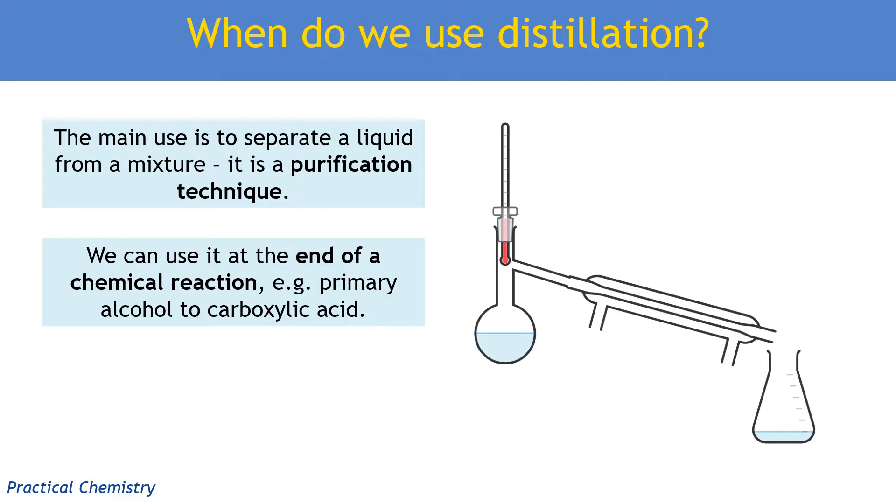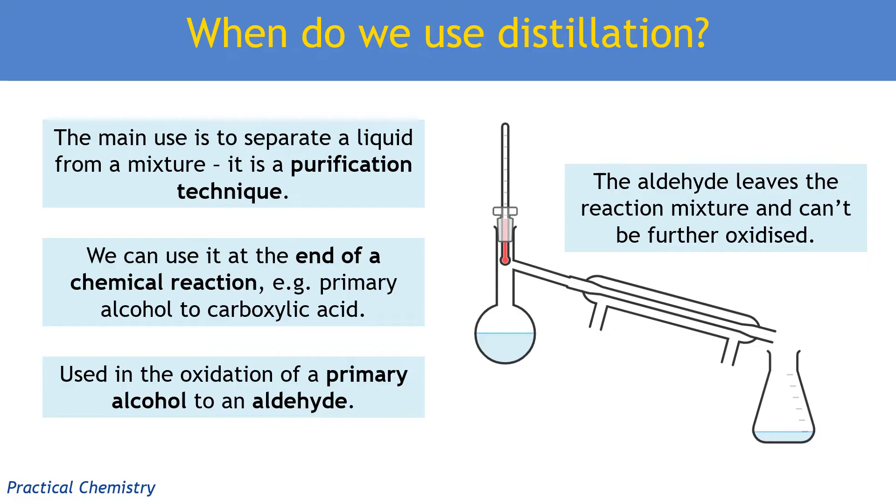Distillation is also used in the oxidation of a primary alcohol to form an aldehyde. In this case, we're not using distillation just as purification. We're actually using distillation to stop the reaction from going any further. The first stage in oxidation of a primary alcohol is to make an aldehyde. And if we have our setup for distillation while we're doing this, the aldehyde will boil and leave the reaction mixture. It's got a low boiling point. It will go straight into the condenser, so it won't go back into the flask where the oxidizing agent is and therefore cannot be further oxidized. So we won't make the carboxylic acid.